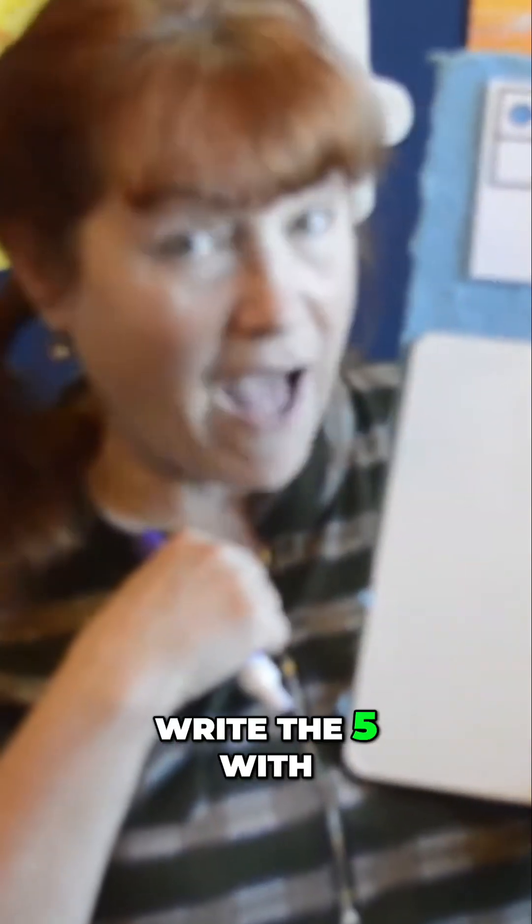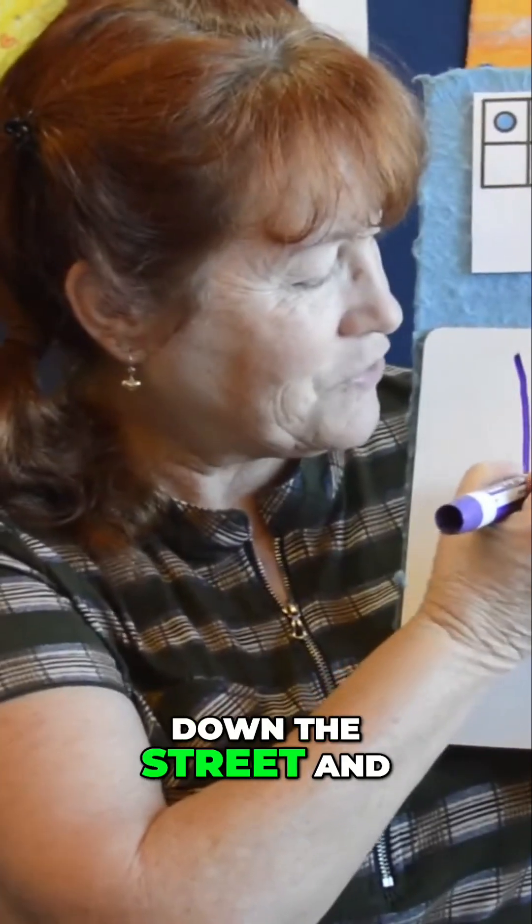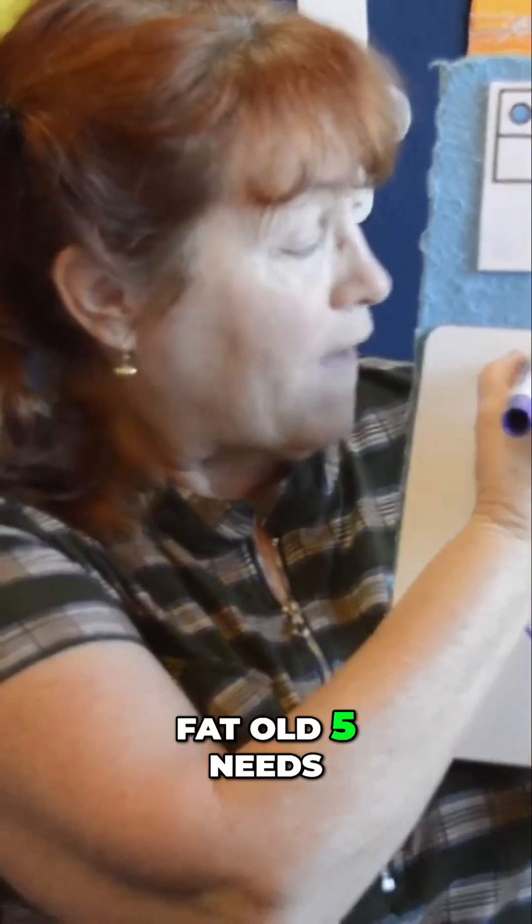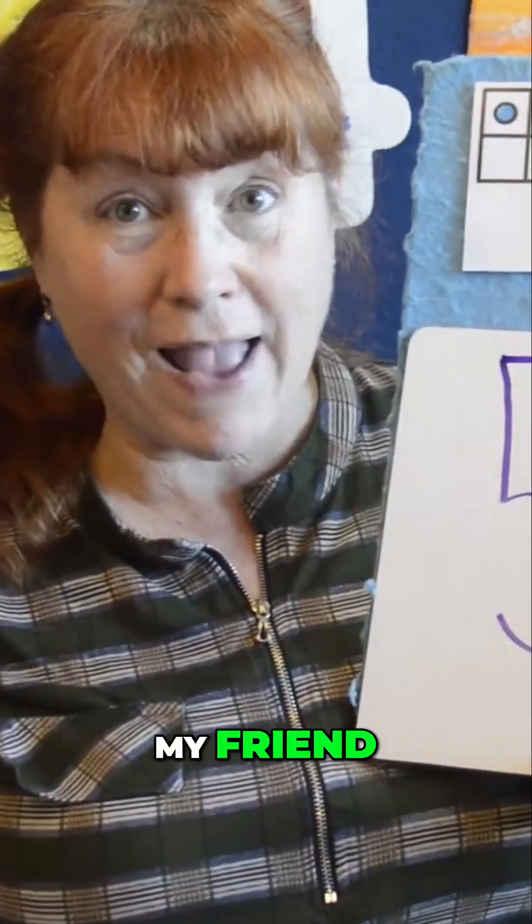So I'm going to show you how to write the five with a song. Are you ready? Down the street and around the bend, fat old five needs his hat, my friend.